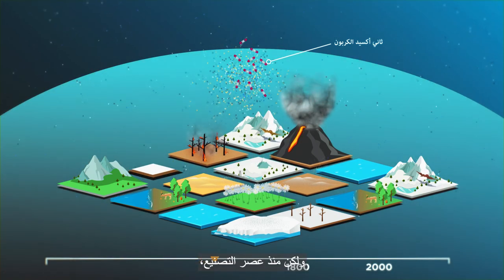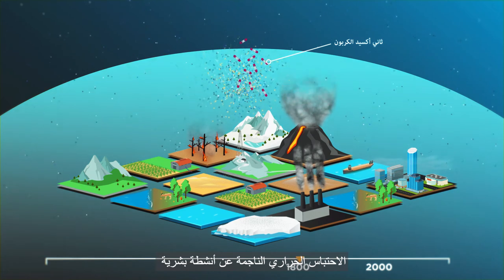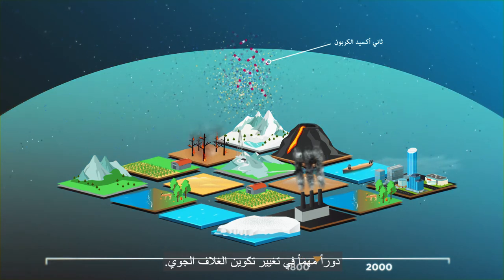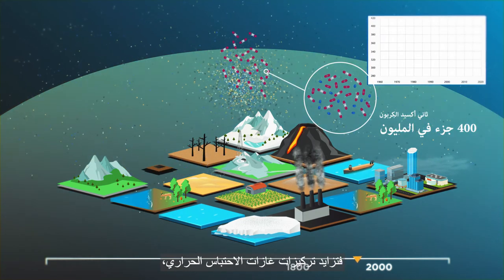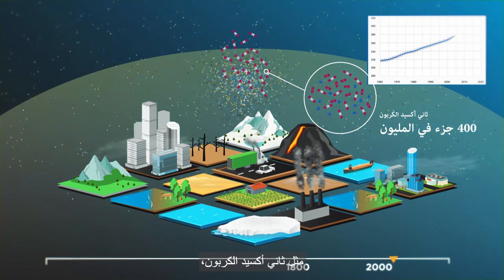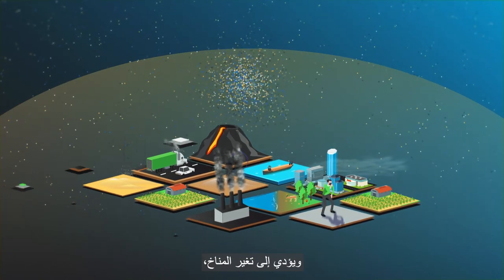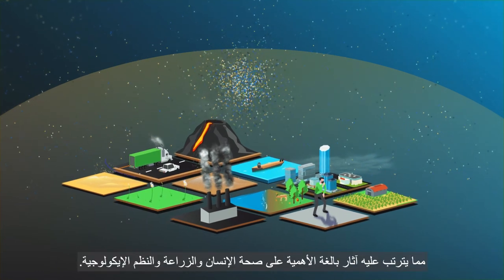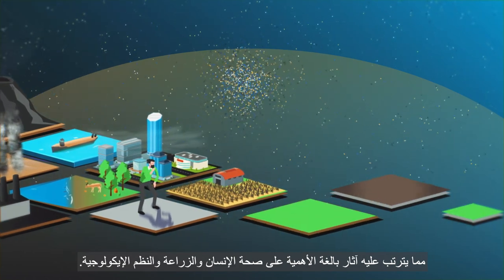But since industrialisation, emissions of pollutants and greenhouse gases from human activities have played a significant role in changing atmospheric composition. Increasing concentrations of greenhouse gases such as carbon dioxide are contributing to global warming and driving climate change, while pollutants are affecting air quality with detrimental impacts on human health, agriculture and ecosystems.